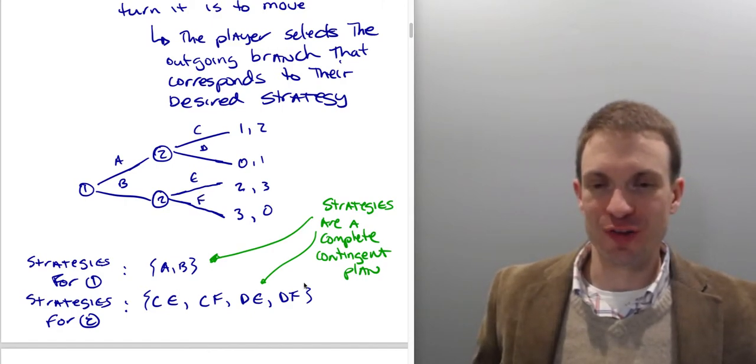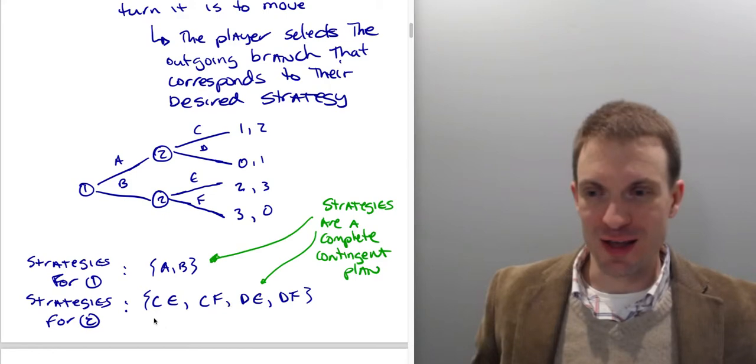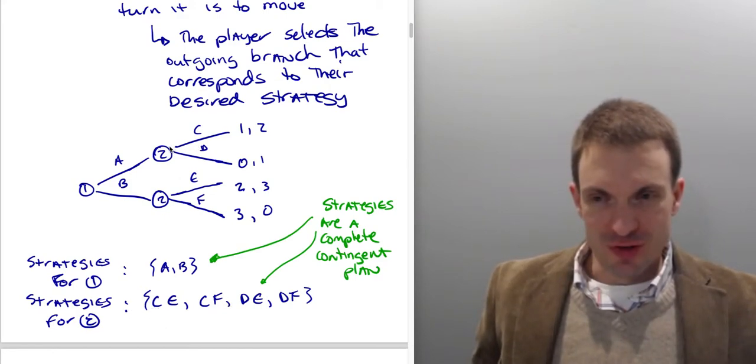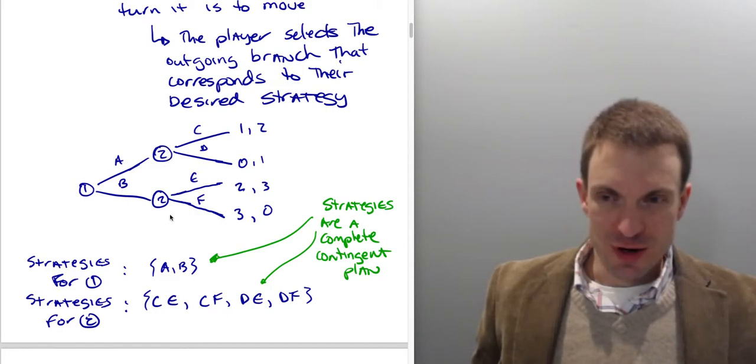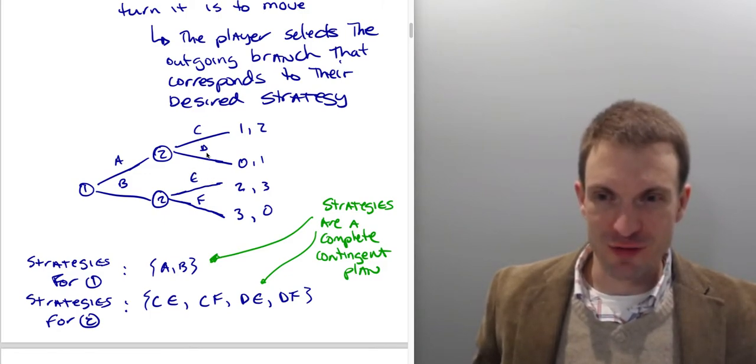These are combinations of what can happen. Player 2's strategies are going to have to stipulate what 2 would do here as well as what 2 would do here. So player 2 strategies are C,E, C,F, D,E, and D,F.